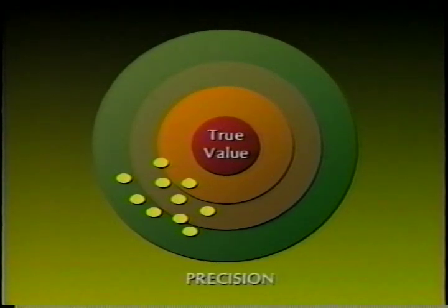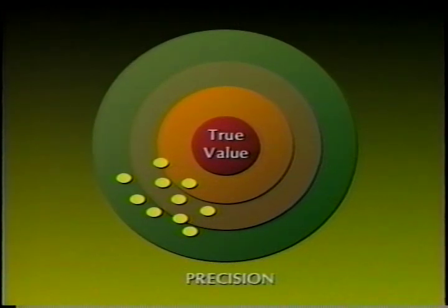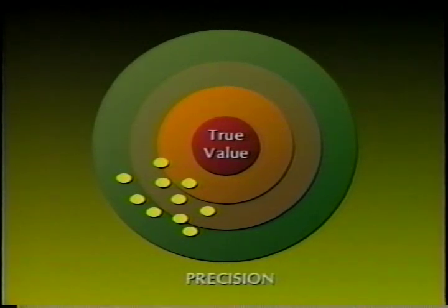In the following example, we see a graphic representation of precision. Precision refers to the closeness to one another of a set of repeated observations. Precision is observed when a set of measurements are very closely grouped. However, as shown in our example, while meeting prescribed standards of precision, these closely grouped observations may not reflect an accurate value of the quantity being observed.